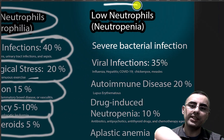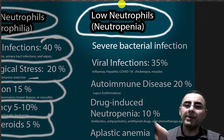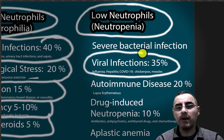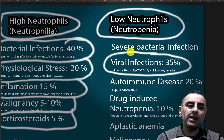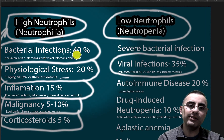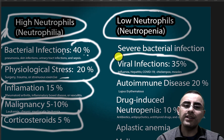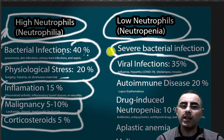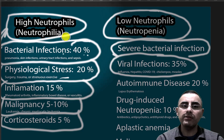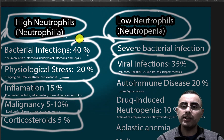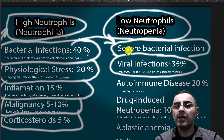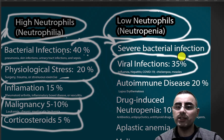Neutropenia is usually caused by viral infections. However, we should remember that while acute bacterial infections typically cause high neutrophils, if the infection is very severe, it can cause low neutrophils — because all neutrophils may be consumed. So after an initial high count, neutrophils can turn low. Severe bacterial infections can therefore also cause neutropenia.